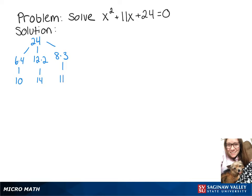So 8 and 3 are the numbers that we're going to want to use. We're going to rewrite x squared plus 11x plus 24 as x plus 8 times x plus 3.